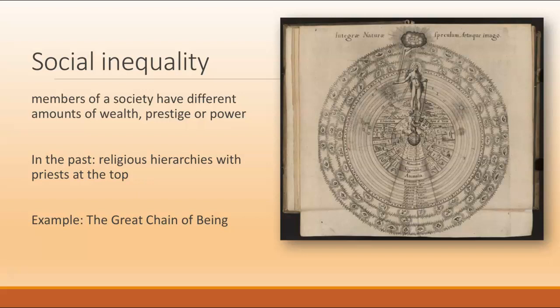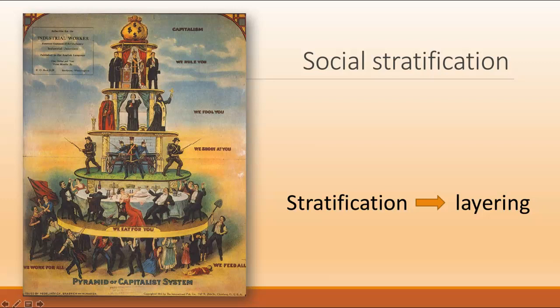Remember the great chain of being from module one? That's the schematic we're looking at now on the right side of the screen, which was a key rationalization for the religious and social inequalities that distinguished medieval Europe. Before the industrial revolution, we can also talk about social stratification, which emphasizes the sense of inequality as a kind of layering.